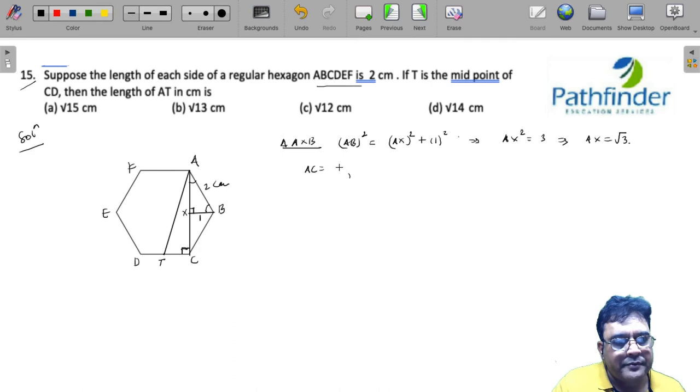So the length of AC must be 2 times the length of AX, which is 2 times root 3. We have got the length of AC.